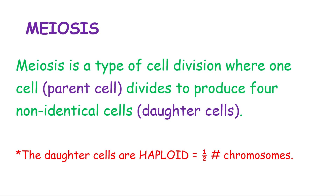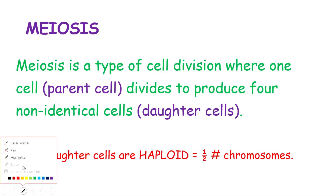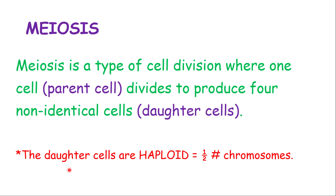Meiosis is a type of cell division where one cell, known as the parent cell, divides and produces four non-identical cells called daughter cells. Very importantly, the daughter cells are called haploid cells — the H stands for half, to help you remember. The daughter cells will have half the number of chromosomes compared to the parent cell. For example, human beings start with 46 chromosomes, and each daughter cell — sperm or egg cells — will have half that number, which is 23 chromosomes.